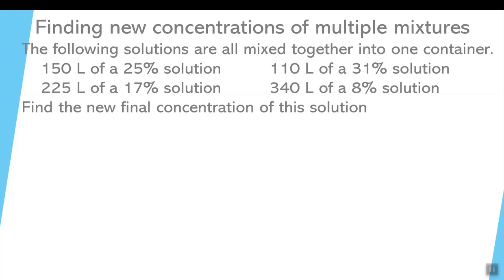Now because you have different volumes for each one, 150 liters, 110 liters, 225 liters, 340 liters, it's kind of hard to just logically make an estimate as to where your final answer is going to be. But we know it's going to be between 31% on the high side and 8% on the low side.